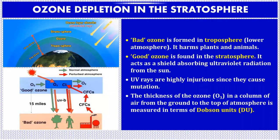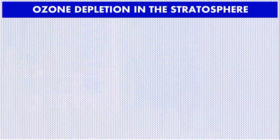There is bad ozone and good ozone. Bad ozone is formed in the troposphere, while good ozone is found in the stratosphere. Bad ozone is harmful to plants and animals, whereas good ozone acts as a shield absorbing UV radiation from the sun. UV rays are highly injurious since they cause mutation. The thickness of ozone in a column of air from the ground to the top of the atmosphere is measured in Dobson units (DU).